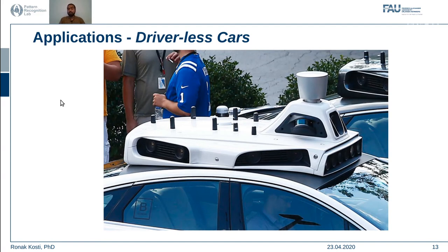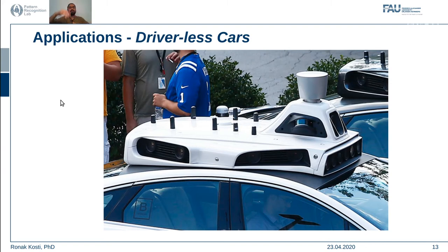This is a closer look at the sensors a driverless car has. It has a lot of sensors, including a lidar sensor — as you can see, this vertical thing. Lidar sensors are quite useful for vertical field of view; they have a huge vertical field of view so you can see how many things are there in your vertical field of view.